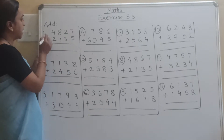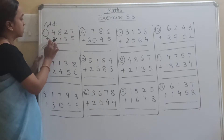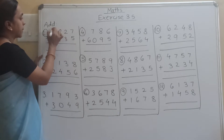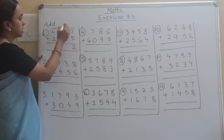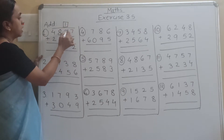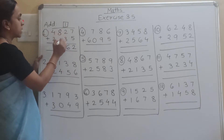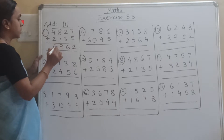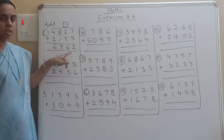The first example is 4827 plus 2135. So 7 plus 5 is 12. What is the carry? 1. Write down 2. Then 2 plus 1 is 3, 3 plus 3 is 6, 8 plus 1 is 9, 4 plus 2 is 6. So our answer is 6962.